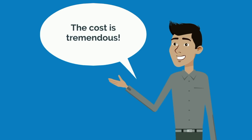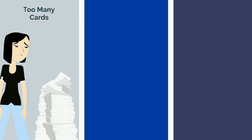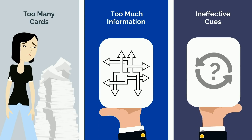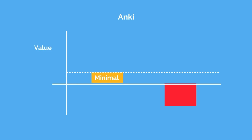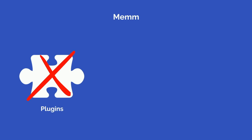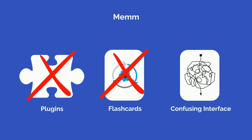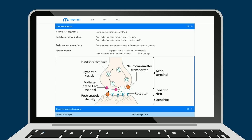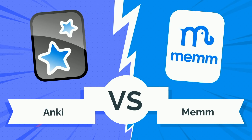Yet the cost is tremendous. Poor flashcards are wide ranging, such as making too many cards, putting too much information on cards, or not testing discrete information. These factors result in minimal or even negative value from using Anki, causing students to drop spaced repetition altogether. MEM, on the other hand, addresses the spaced repetition barriers to entry. There are no plugins to install, no flashcards to make, and no confusing interface between the user and studying for the MCAT. You simply log in and begin studying. There's a minimal learning curve, and the flashcards are comprehensive and follow best practices. This round easily goes to MEM.